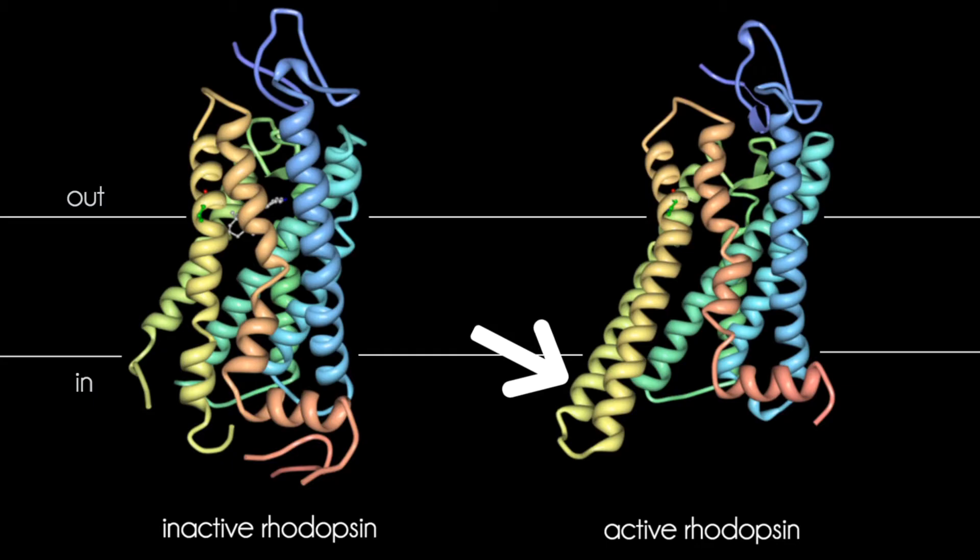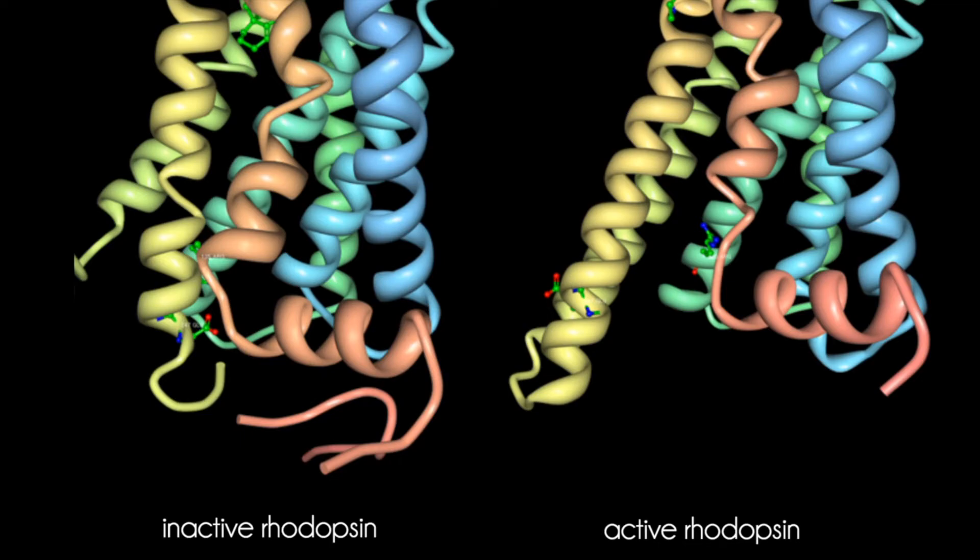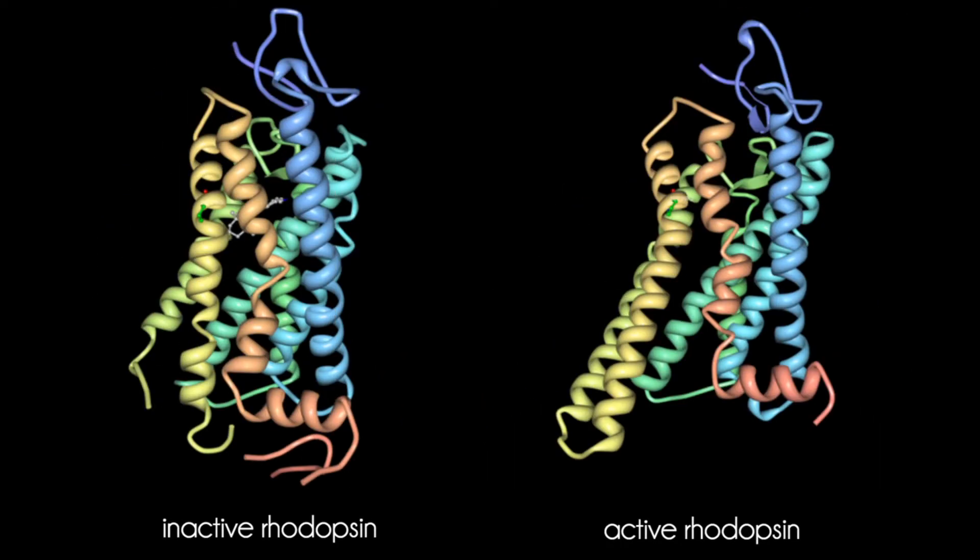Additionally, Helix-5 extends into the cytoplasmic matrix by eight residues, increasing the binding interface. These conformational changes result in the breakage of the salt bridge between arginine-135 and glutamate-247, opening up the binding site on active rhodopsin for the G protein transducin.